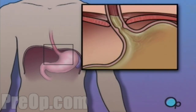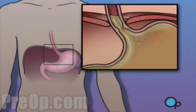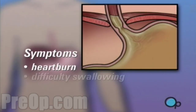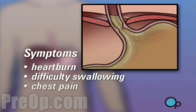When you have reflux disease, the weakened muscle allows the contents of your stomach to back up into your esophagus. This can cause considerable discomfort, often worse at night, with symptoms like heartburn, difficulty swallowing, chest pain, and belching.